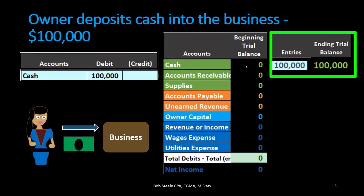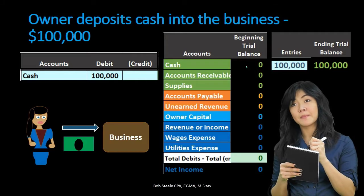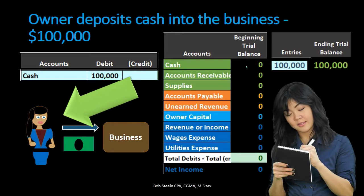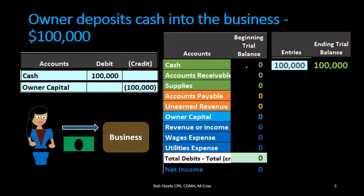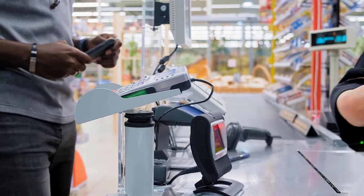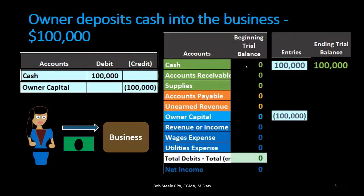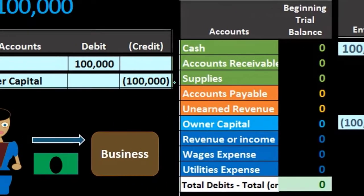If we were to post this out, we're starting at zero, going in the debit direction 100,000 to 100,000. We then need a credit of something and just need to know what that credit account will be. The person who put the money in is the owner, so we're not crediting revenue — it wasn't a customer. It's going into the owner capital account. If it were a corporation, the common stock account would be credited.